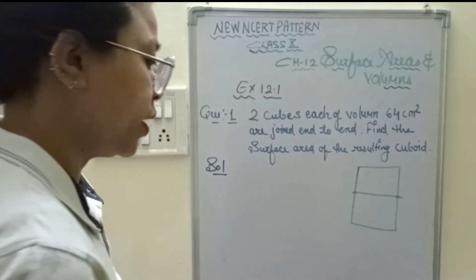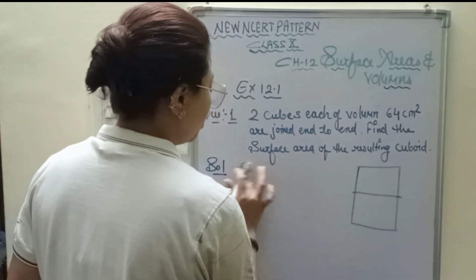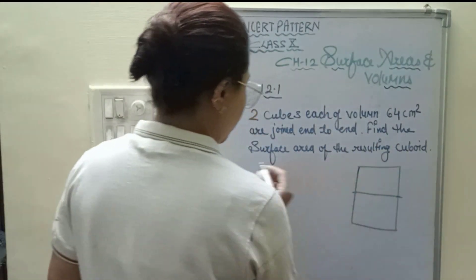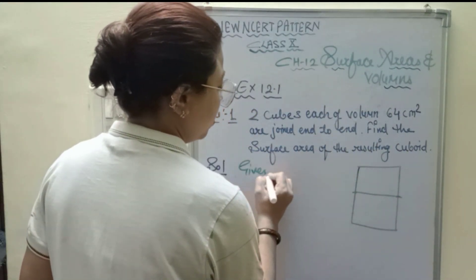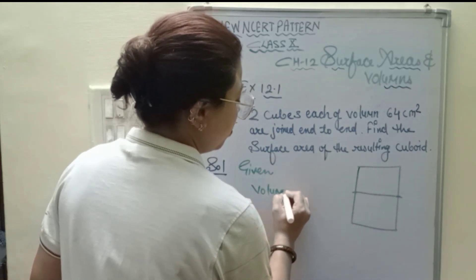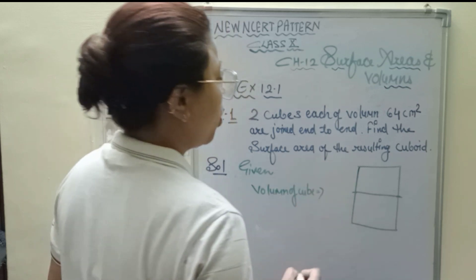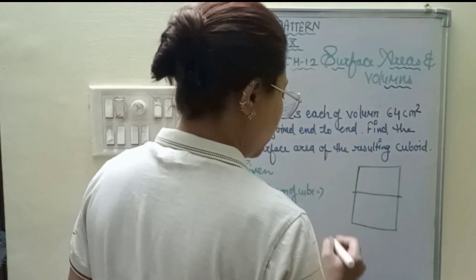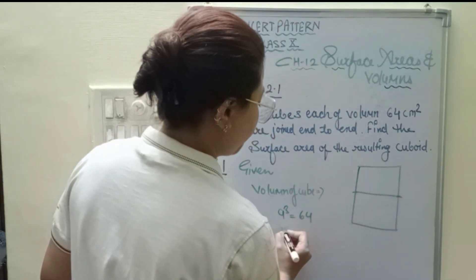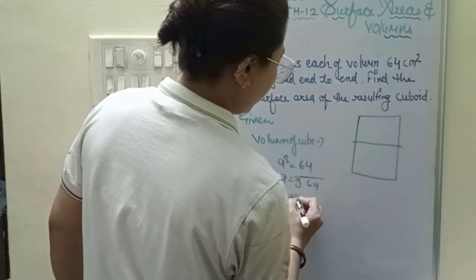For the solution, the given volume of each cube is a³ = 64, so a = 4 cm.